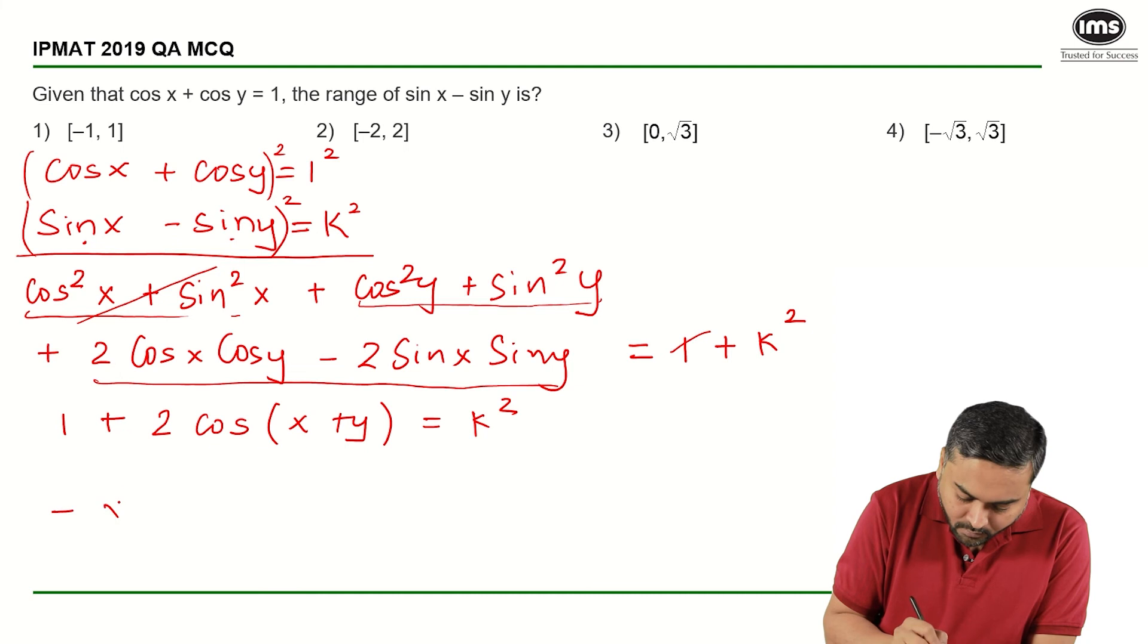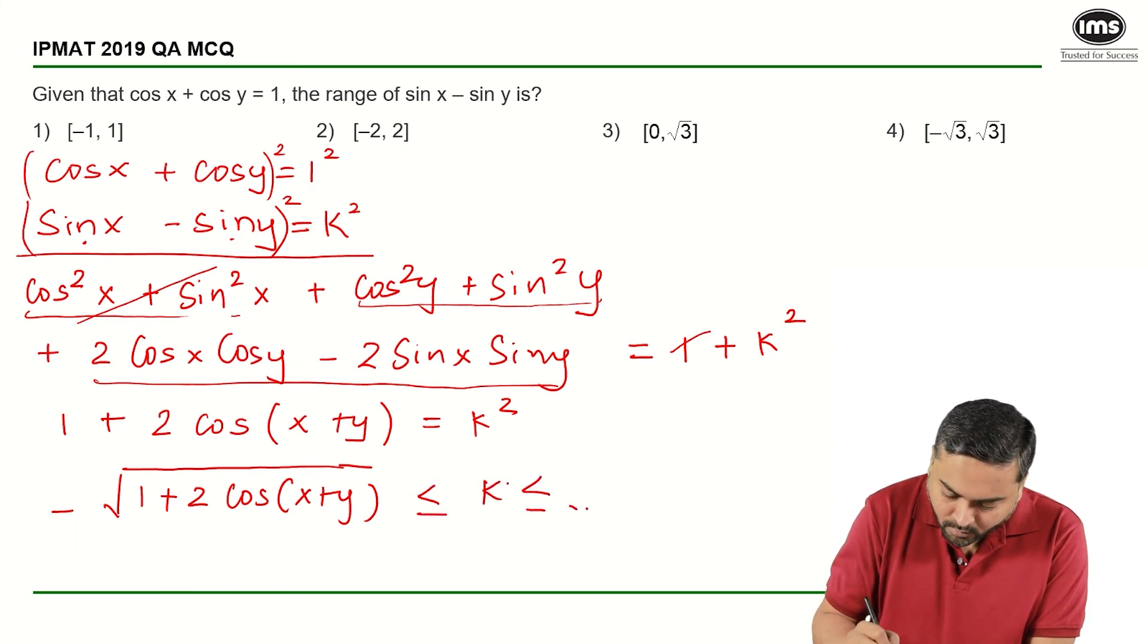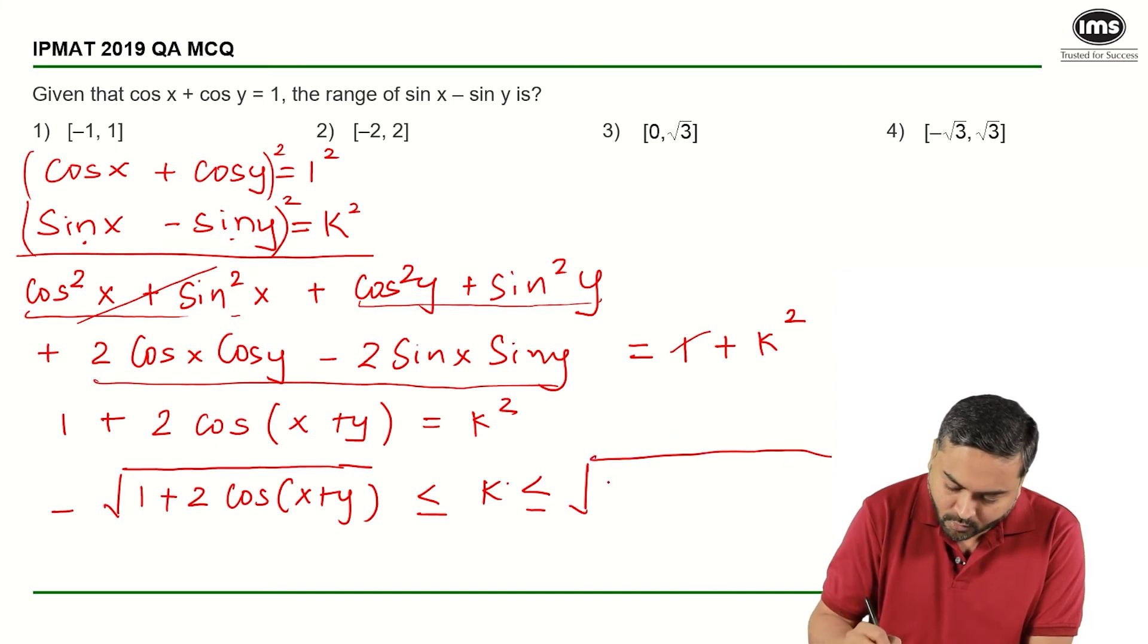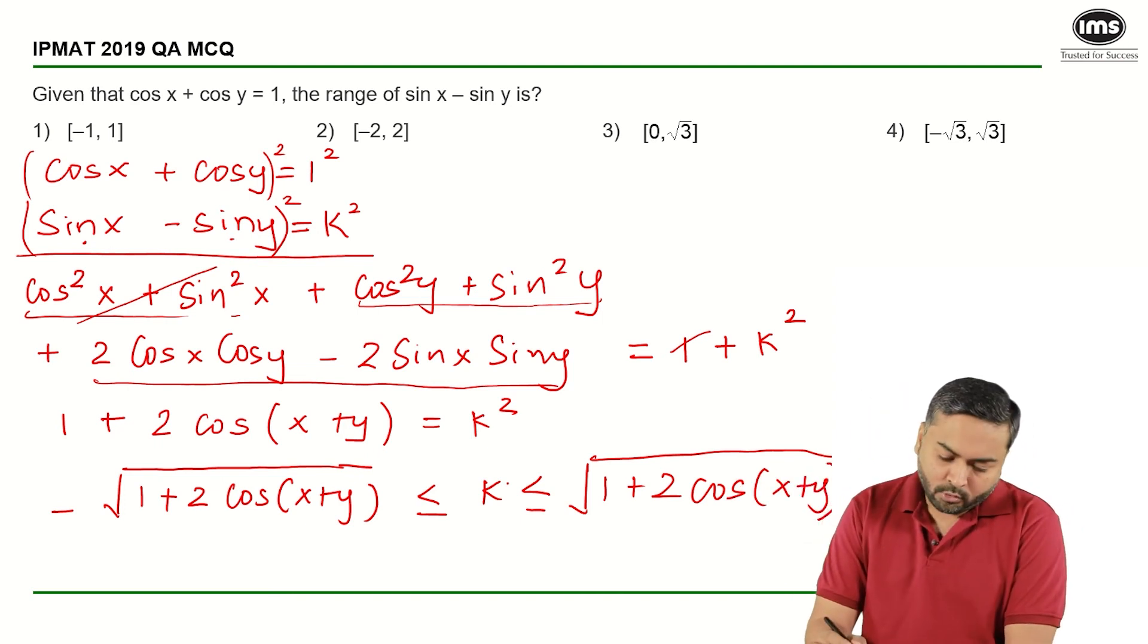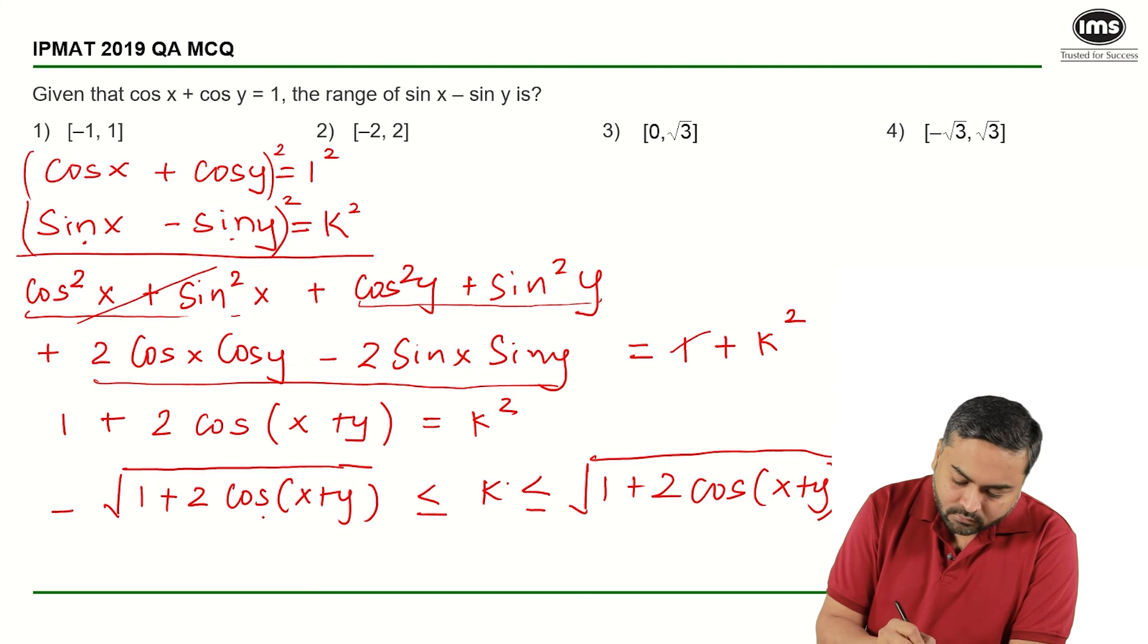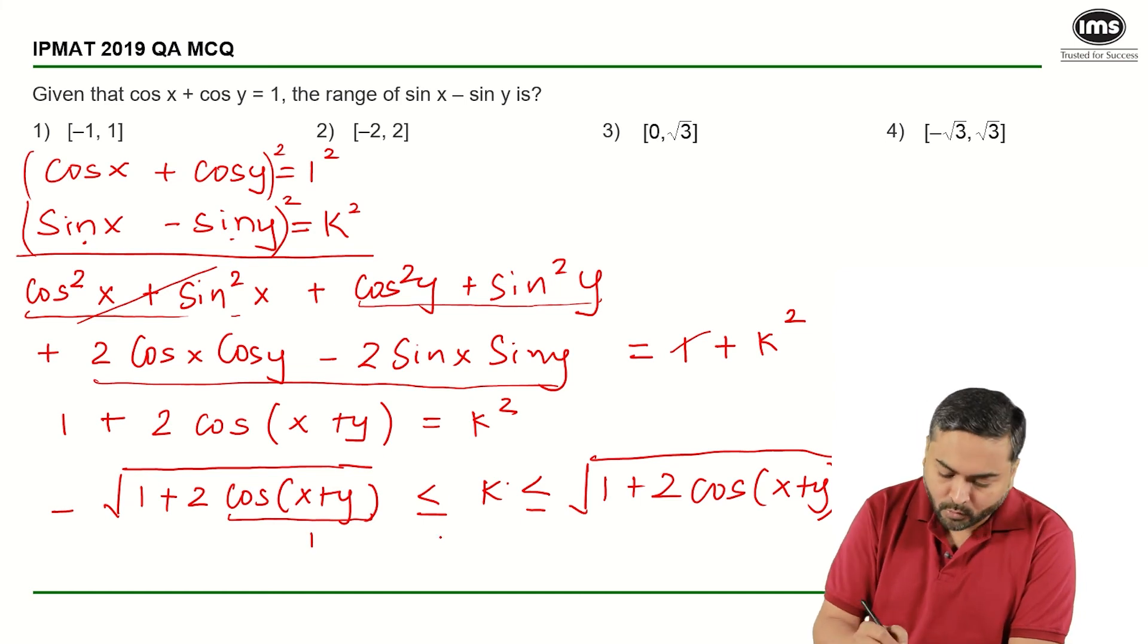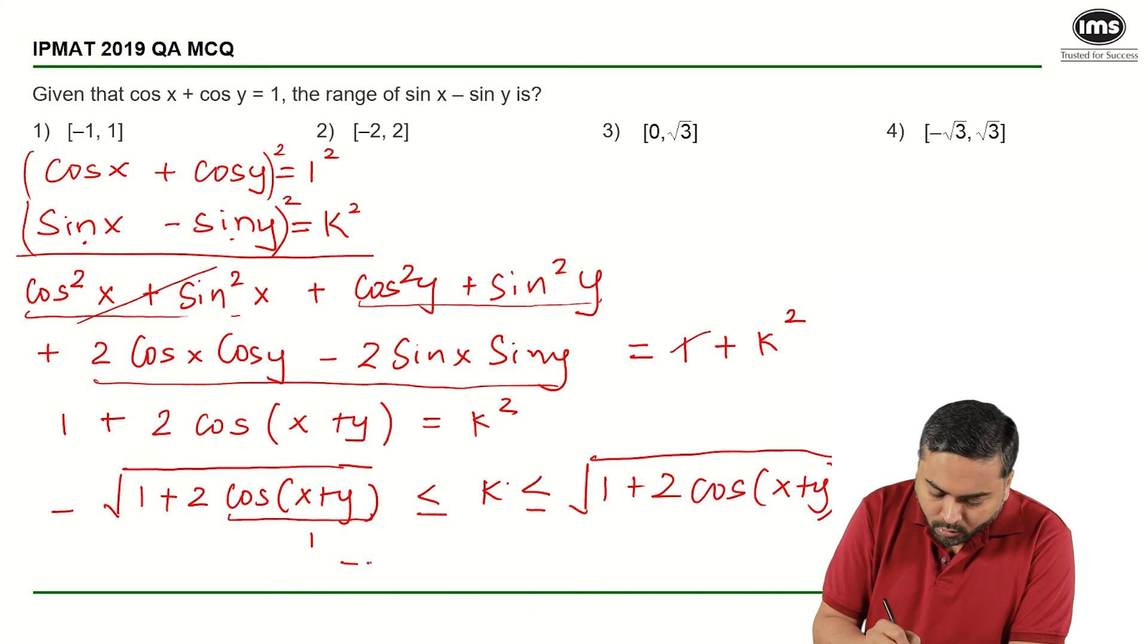So k is between the negative square root, that is -√(1 + 2cos(x + y)), and the positive square root, that is √(1 + 2cos(x + y)). Now I want to find out what is the maximum magnitude of the expression inside the square root sign. I know that cos of 0 will be 1, so let us say that this will be 1. So what do I get? -√3 ≤ k ≤ √3. That is the given answer, which is fourth option.